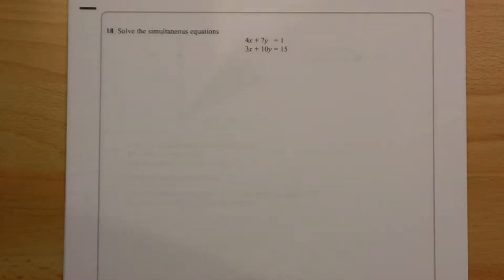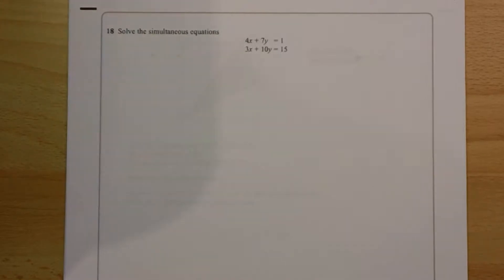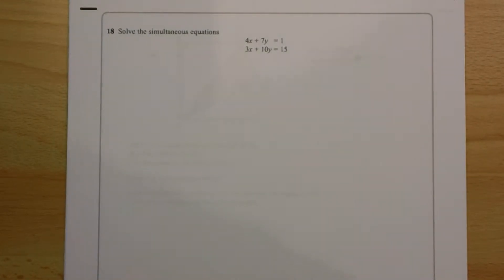With these type of simultaneous equations, what you want to do is add or subtract one from the other to eliminate either the x's or the y's. Now at the minute we can't do that, because whatever we try, we're not going to eliminate, because we've got different numbers of x's and we've got different numbers of y's.